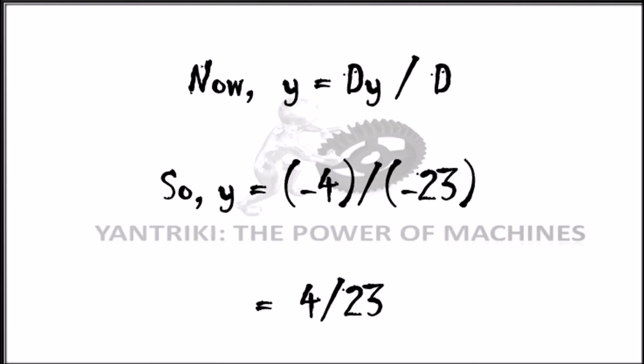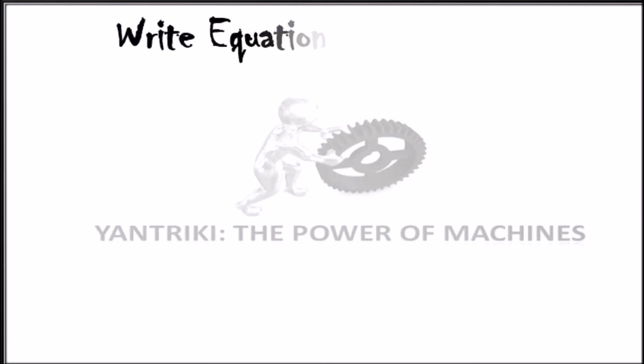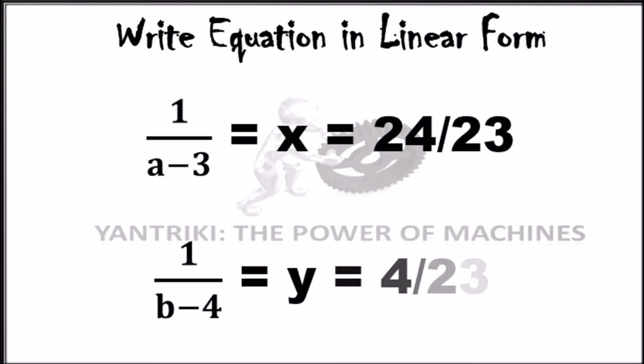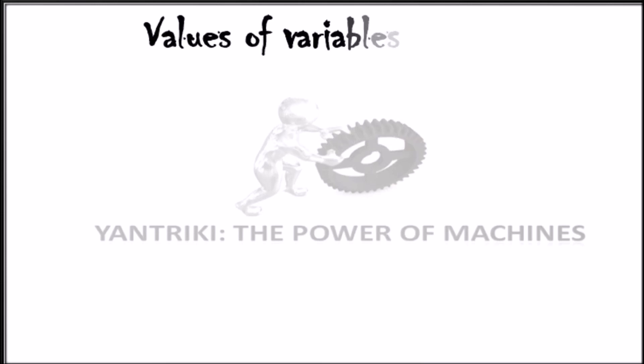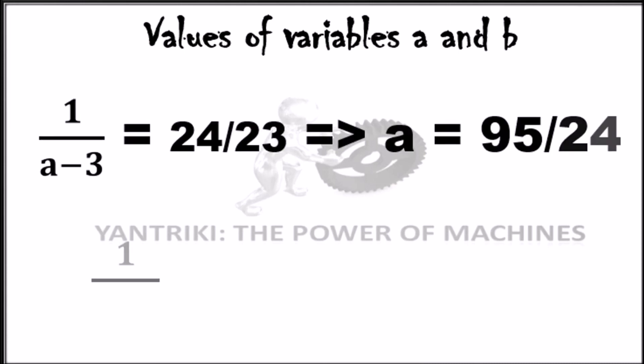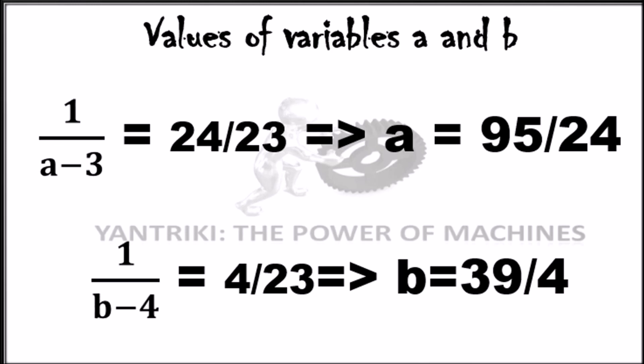Initially the variables were 1/(a−3) and 1/(b−4). Since we set x = 1/(a−3) = 24/23, and y = 1/(b−4) = 4/23, we can back-substitute to find the actual values of a and b. The value of a = 95/24 and the value of b = 39/4. Hence, we were able to calculate the values of a and b for this system of linear equations using Cramer's Rule for a 2×2 matrix with 2 variables.